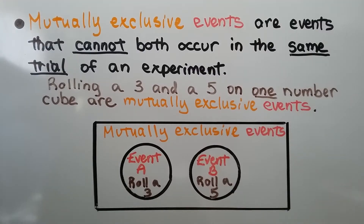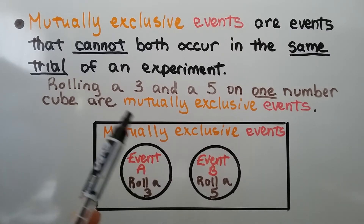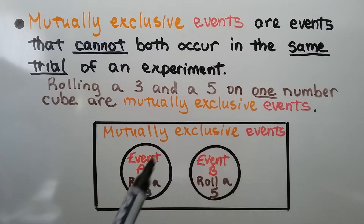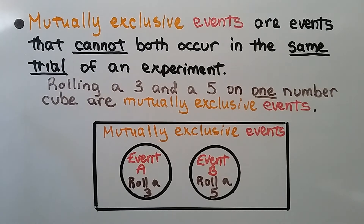Mutually exclusive events are events that cannot both occur in the same trial of an experiment. So rolling a three and a five on one number cube are mutually exclusive events. We can't roll it one time on one number cube and get both a three and a five — they're separate from each other. The word exclusive means not divided or shared with others.